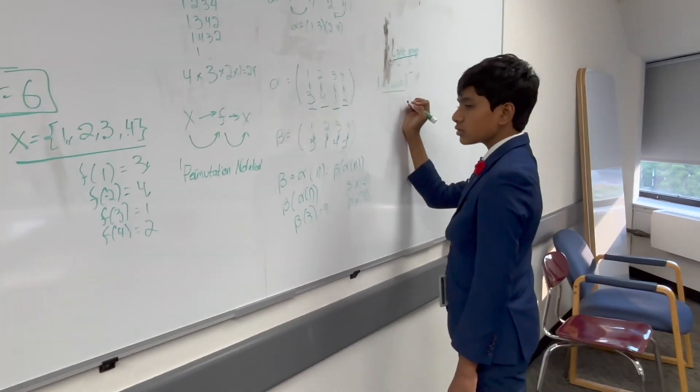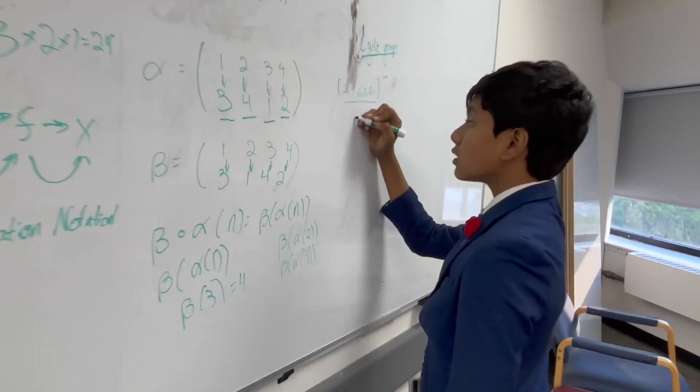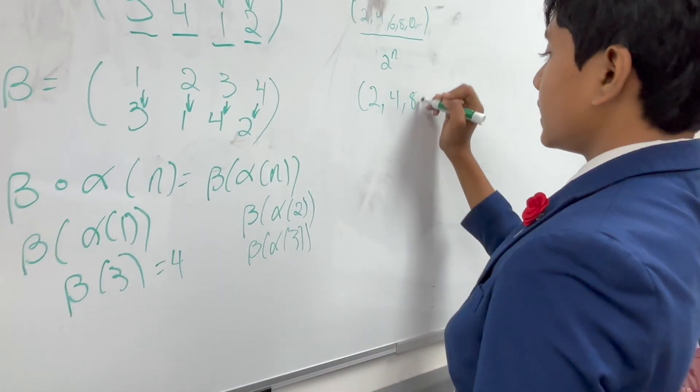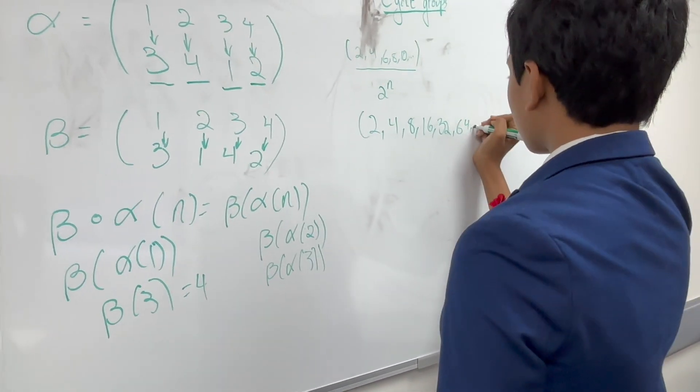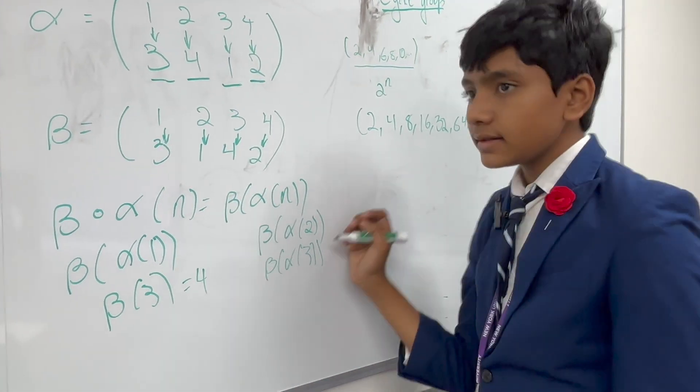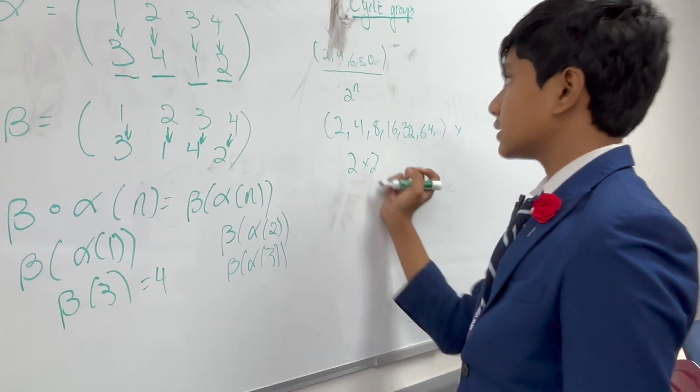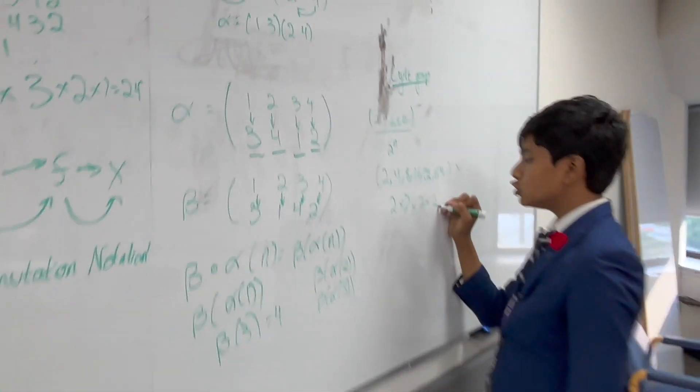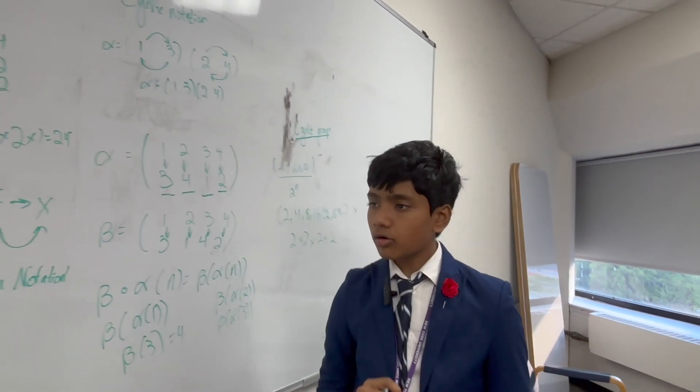And another thing that might come to mind are the powers of 2. 2, 4, 8, 16, 32, 64, etc., and over multiplication. And you'll notice that this is a cyclic group because every element can be expressed as 2 multiplied by itself a certain number of times.